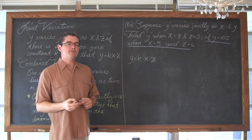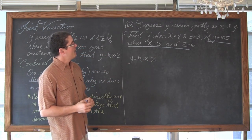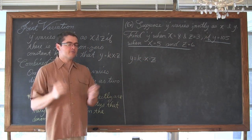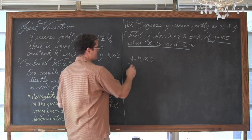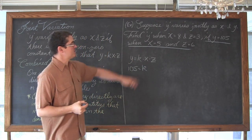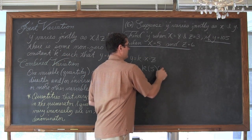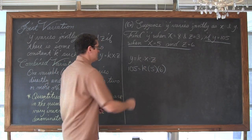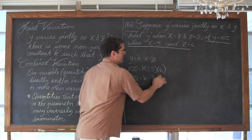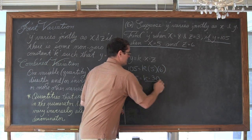We have the basic structure of our joint variation written down. As soon as I read this I would stop and write this out. Now we are going to go to the part of the problem where they give us all the information except for the constant. So when y equals 105, we don't know the constant of change, but we know that x equals 5 and z is equal to 6. So 5 times 6 is 30, giving us 105 equals 30k. We need to undo that multiplication by dividing both sides by 30.